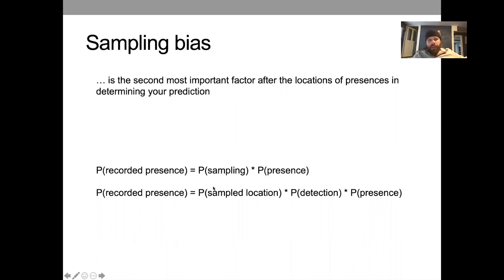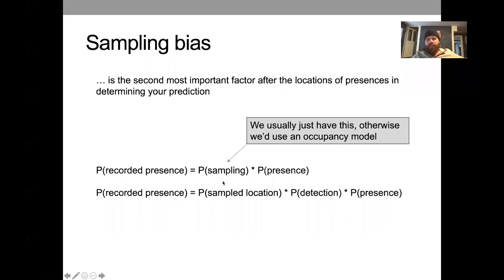Ultimately we can decompose this probability that a presence was recorded into the probability that you sampled a particular location and the probability that it was present. We can further decompose this into saying that sampling is related to whether you went to a location or not and how likely your probability of detection is if it were there. So probability of detection could be related to how long you spend in that particular location looking for something. It could depend on the quality of the observer. Could have been a lot of different things. Unfortunately we don't typically know enough information about these two to decompose them. So they end up being wrapped up in this probability of sampling. And so ultimately what we need to do is account for the sampling so that we can get at this true probability of presence.